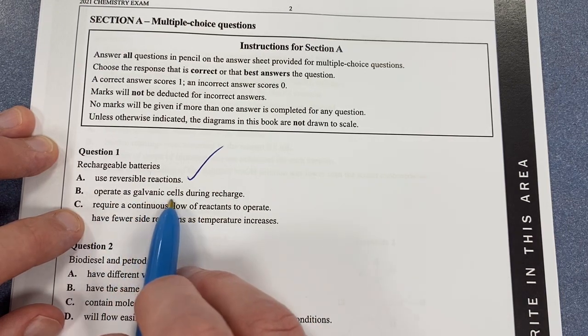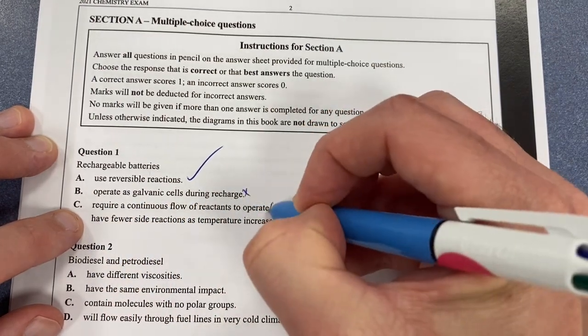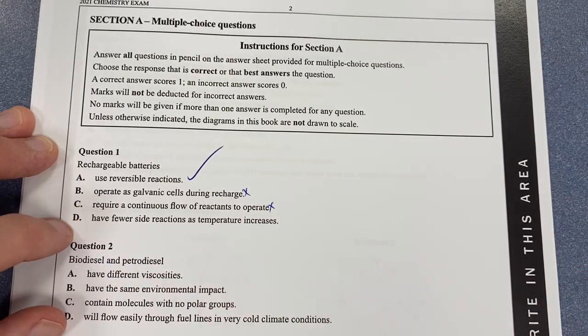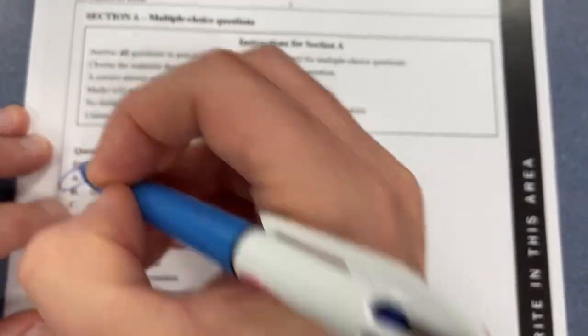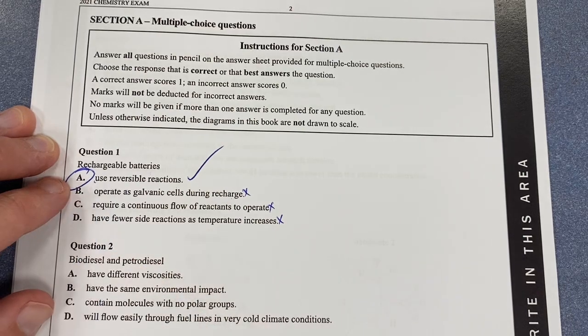They actually operate as galvanic cells during discharge, not that one, so that's not right. Have fewer side reactions as temperature increases - that's not right. So therefore, it's going to be A as our answer for question one.